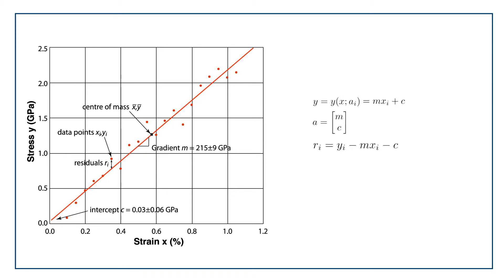So here I've plotted the optimal straight line for this data. It happens to have a gradient of 215 gigapascals and an intercept of 0.3 gigapascals for c. I can also find the mean of x, x-bar, and the mean of y, y-bar, which are at the geometric center of mass of that data set.